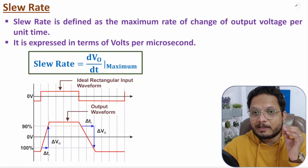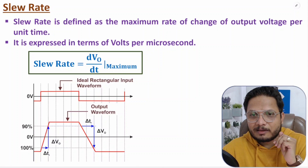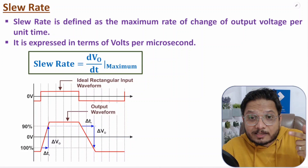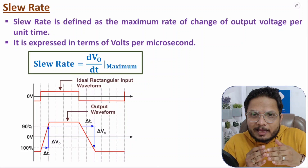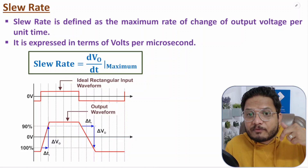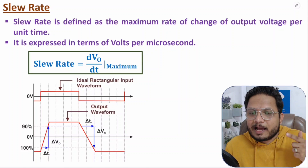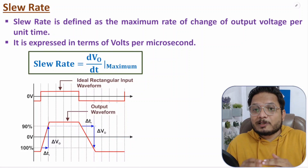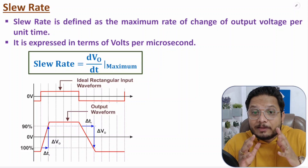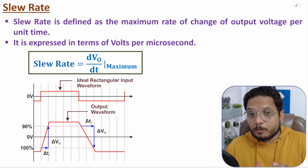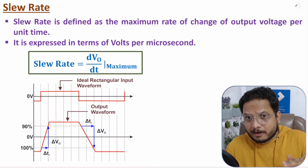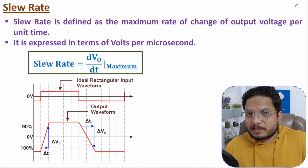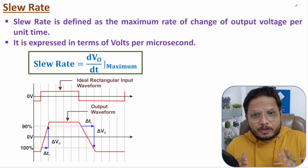Slew rate should be as high as possible. Slew rate explains how fast the op-amp can react to any signal. If slew rate is high, the output response will be faster. Ideally, slew rate should be infinite. I hope you have understood all the parameters of the operational amplifier. If you have any questions, please note them in the comment section. Thank you so much for watching this video.